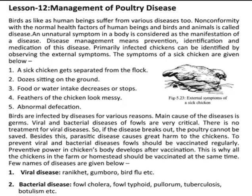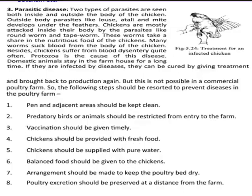Diseases are given below. One is viral disease: Raniketh, Gumbro, and Bird Flu, etc. And bacterial disease: falls cholera, falls typhoid, fallurums, antivaclosis, and botulism, etc. And parasitic disease: two types of parasites are seen, both inside and outside the body of the sickan. Outside body parasites like louse, tail mite, and fluff under the feathers. Sickans are mostly attacked inside the body by parasites like worms and typhons. These worms take a share in the nutrition food of the sickan. Many worms suck blood from the body of the sickan and the sickan suffers and dies.